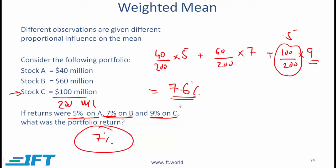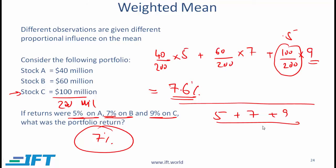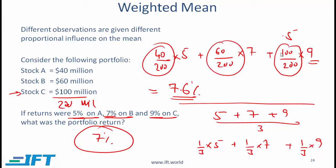Notice that with the regular arithmetic mean, each observation is given the same weightage. So 5 plus 7 plus 9 divided by 3 is essentially 1/3 times 5 plus 1/3 times 7 plus 1/3 times 9. The weight 1/n is applied equally to all items, which clearly does not make sense in this portfolio situation. With a weighted mean, we assign weightages more relevant to the problem we are solving.